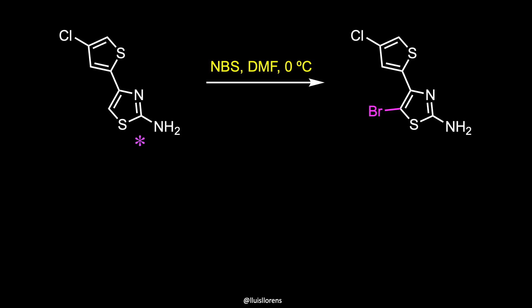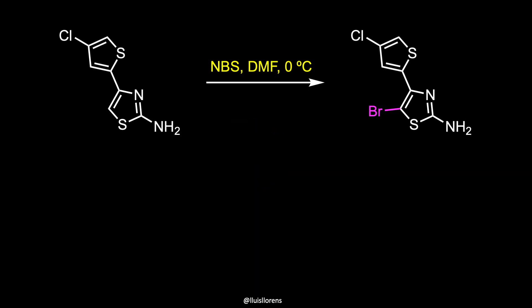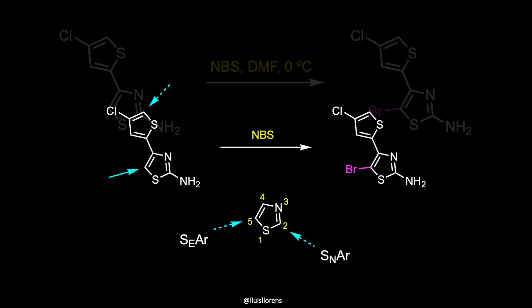The thiazolamine is then brominated with N-bromosuccinimide in DMF. While bromothiazoles can be produced via direct bromination, thiazole is both less aromatic and considerably less electron-rich than thiophene. As a consequence, electrophilic aromatic substitution of thiazole is much less facile.